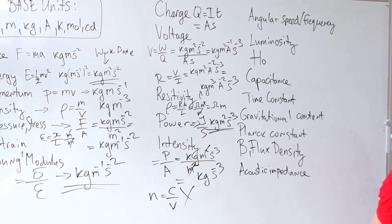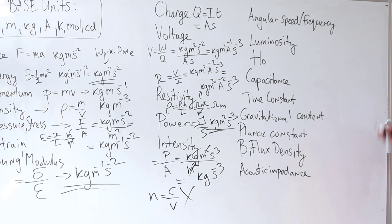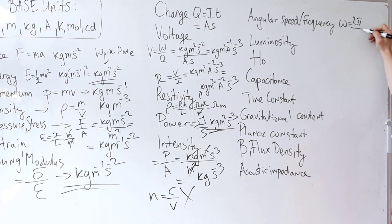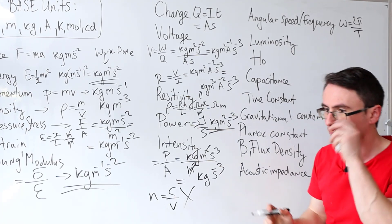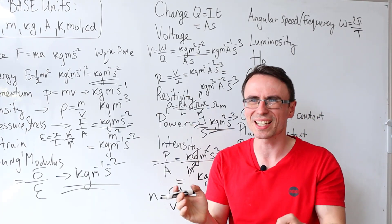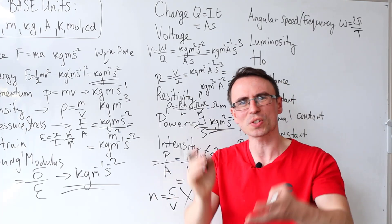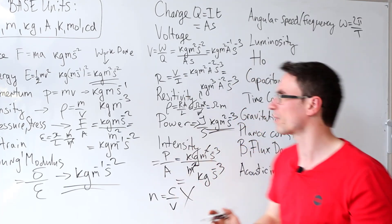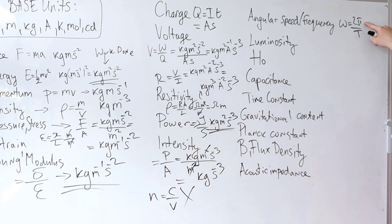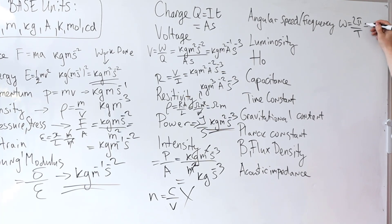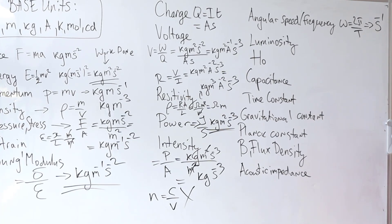Moving on to angular speed and frequency — that's just two pi over T. Two pi, the radian, is really just unitless — it's length divided by length — so this has no units divided by time. The base unit of both angular speed and frequency is per second, or s to the power of minus one.